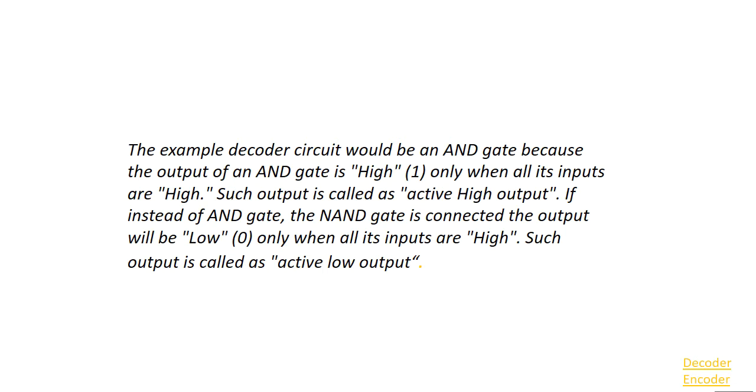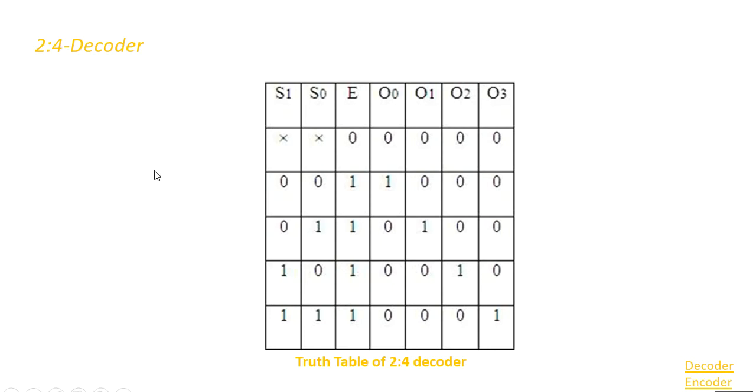The example decoder circuit would be an AND gate, because the output of an AND gate is high (1) only when all its inputs are high. Such output is called active high output. If instead of an AND gate, the NAND gate is connected, the output will be low (0) only when all its inputs are high. Such output is called active low output.